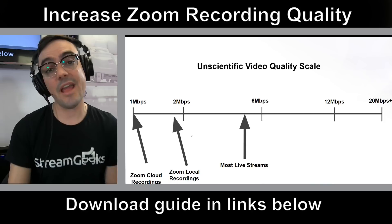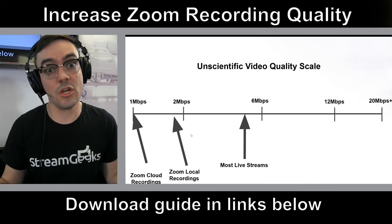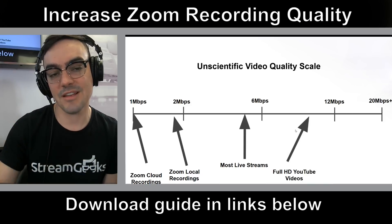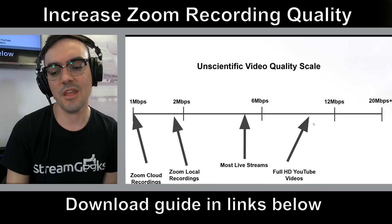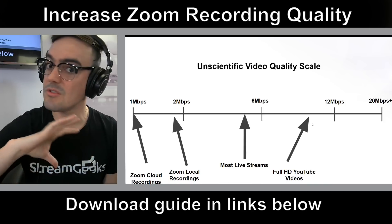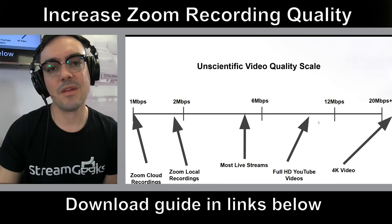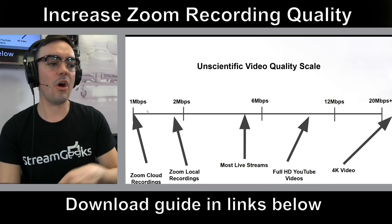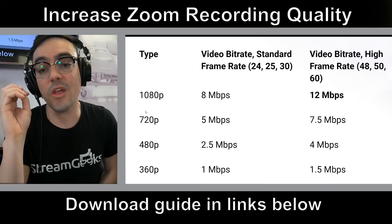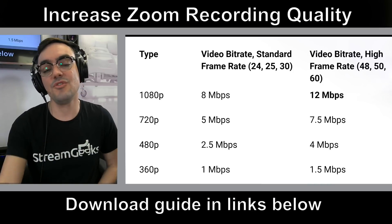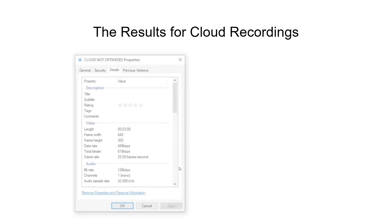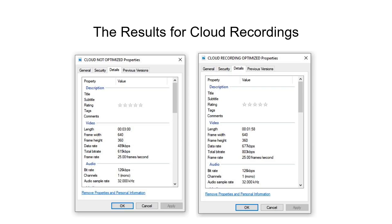Most HD live streams that people consider good quality are around six megabits per second — that's television quality per an Akamai survey. YouTubers like to push to 12 or 20 megabits per second, which is where 4K territory begins. For reference, YouTube recommends 8 megabits per second for 1080p and 5 megabits per second for 720p. Zoom is way lower than what YouTube recommends.